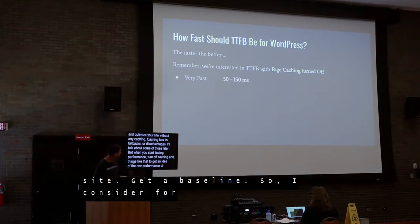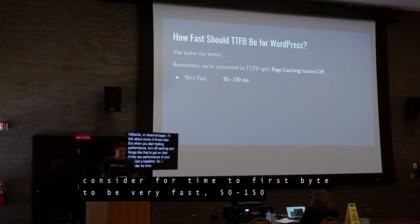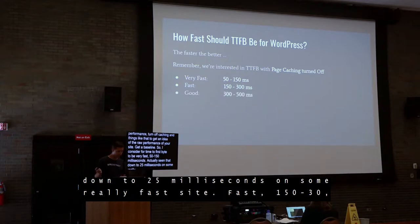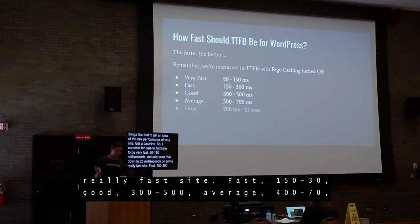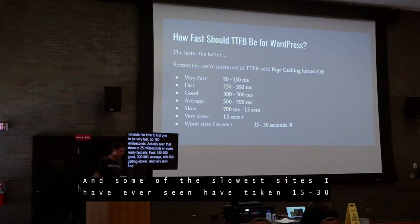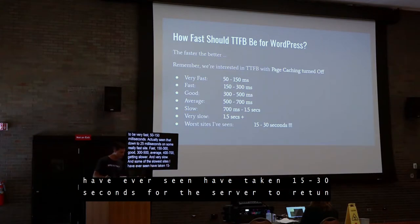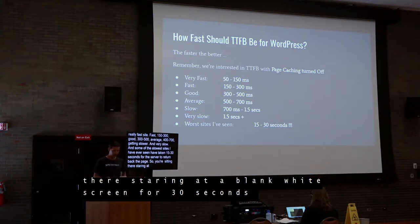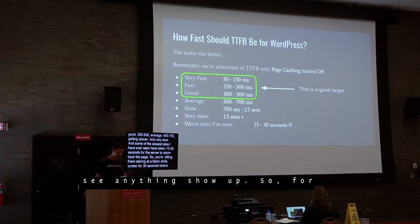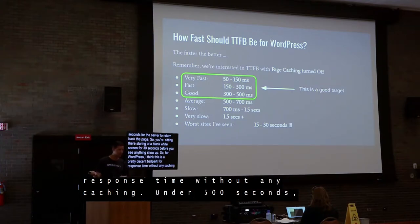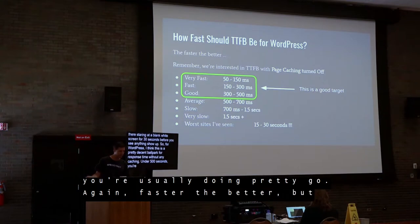For time to first byte, I consider: very fast to be 50–150 milliseconds — I've seen it down to almost 25ms on really fast sites. Fast is 150–300ms, good is 300–500ms, average 500–700ms, getting slower above that, and very slow at the extreme end. Some of the slowest sites I've seen have taken 15 to 30 seconds for the server to return a page — you're staring at a blank white screen for 30 seconds before you see anything.